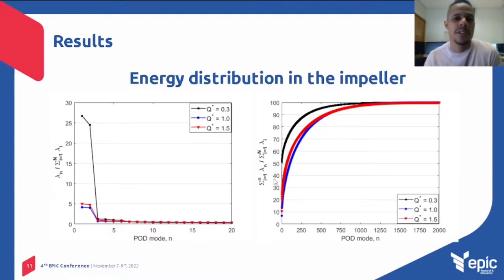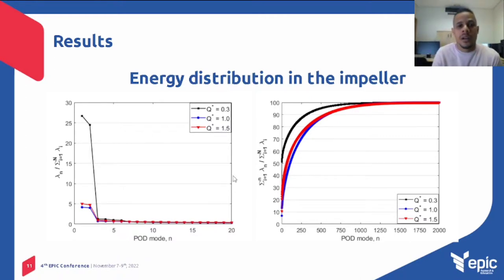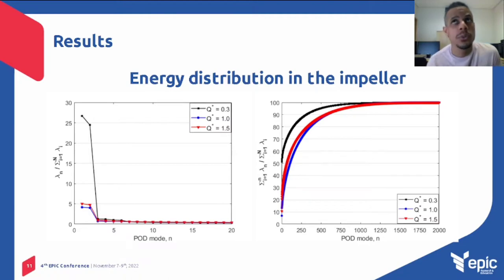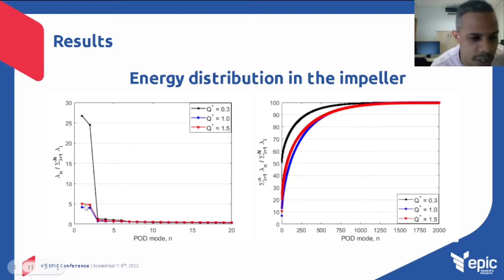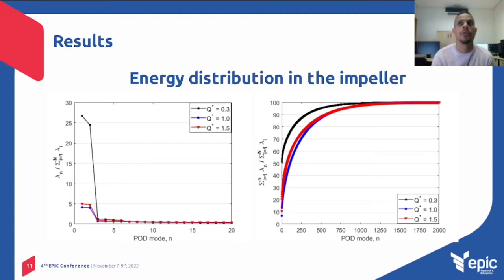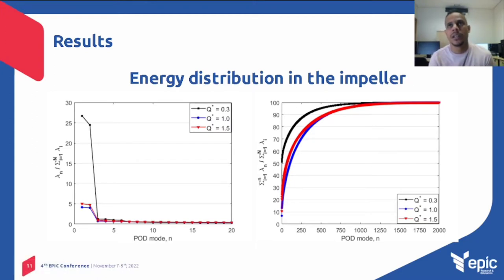Here I present the POD analysis results of the work. For the 0.3 BEP condition, presented here in the black curve, 50% of the turbulent energy is contained in the first two modes. For the 1 BEP, presented in the blue curve, and 1.5 BEP, presented in the red curve, the first two modes account for only 15% and 27% of the total turbulent energy. This is an indication that for low flow rate, the flow is dominated by large-scale turbulent structures — that is, coherent flow structures.